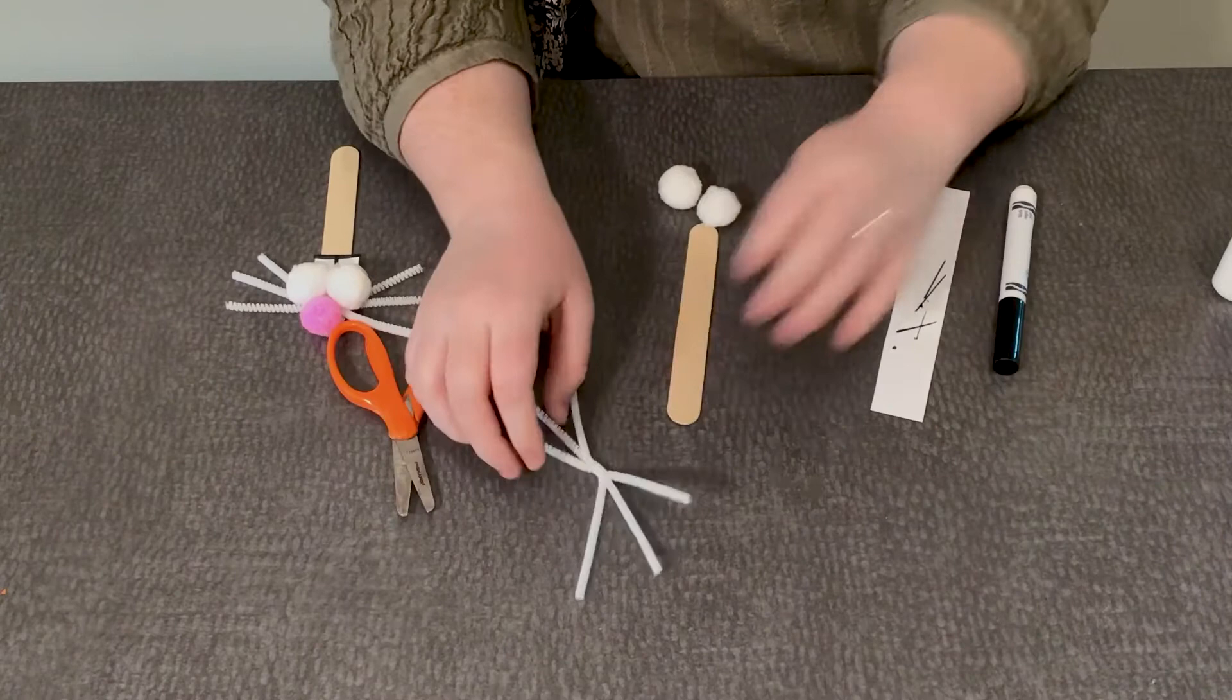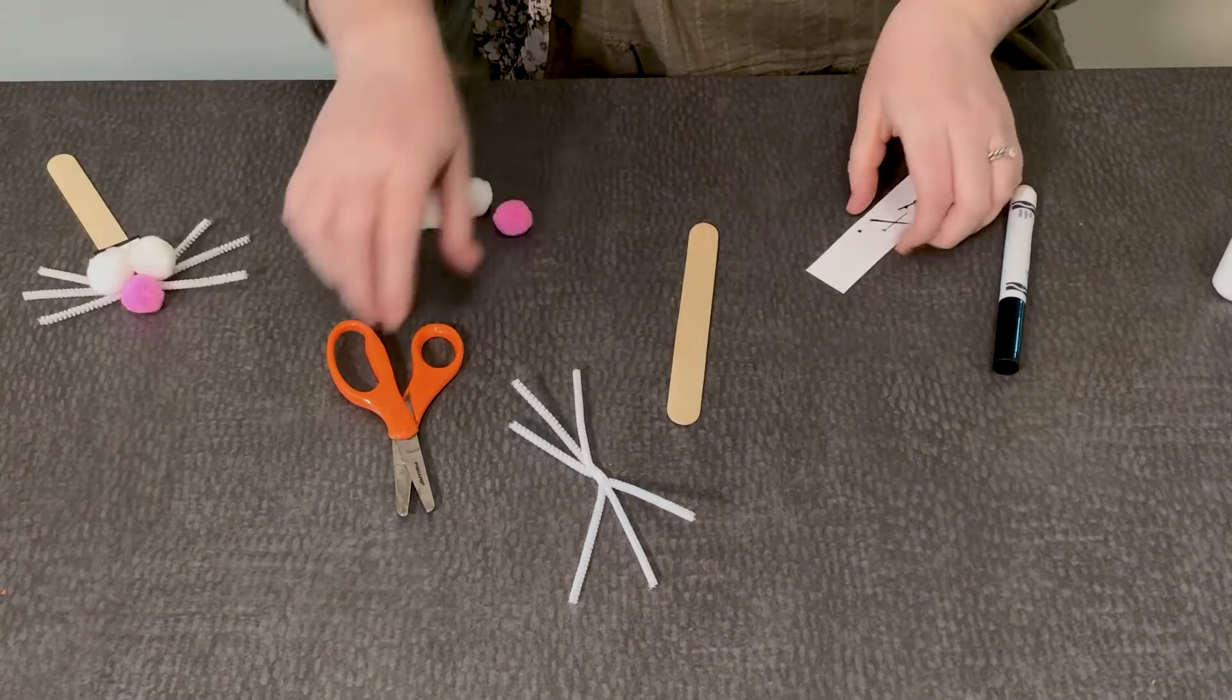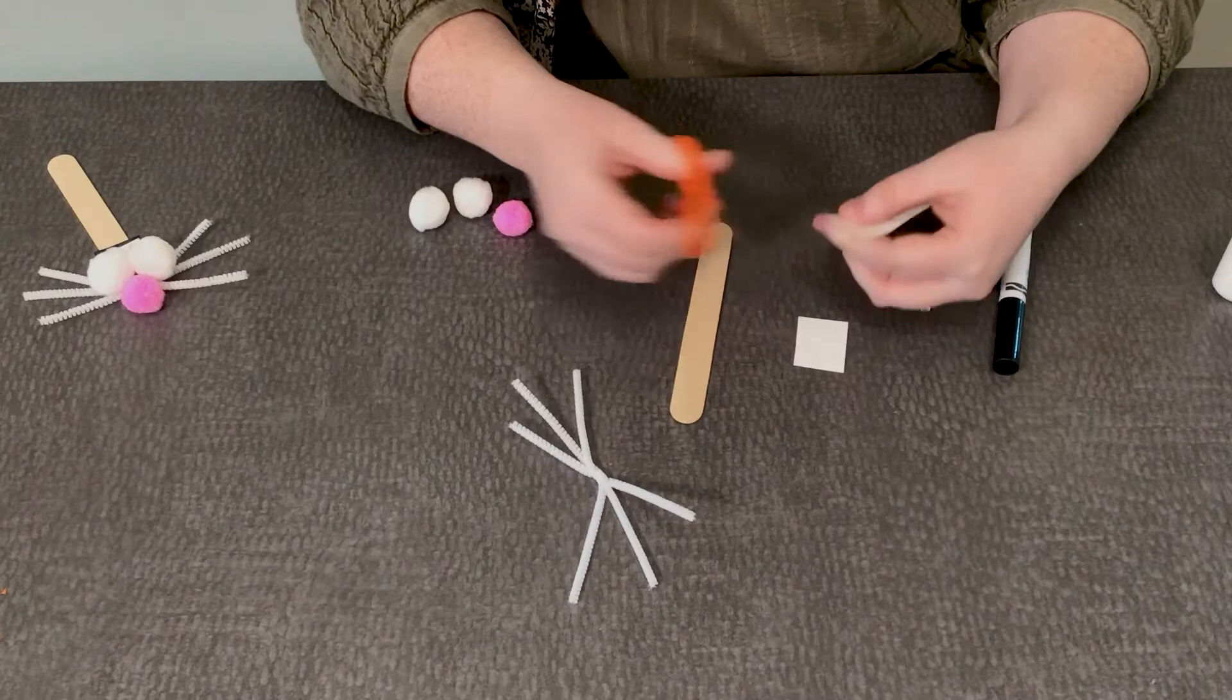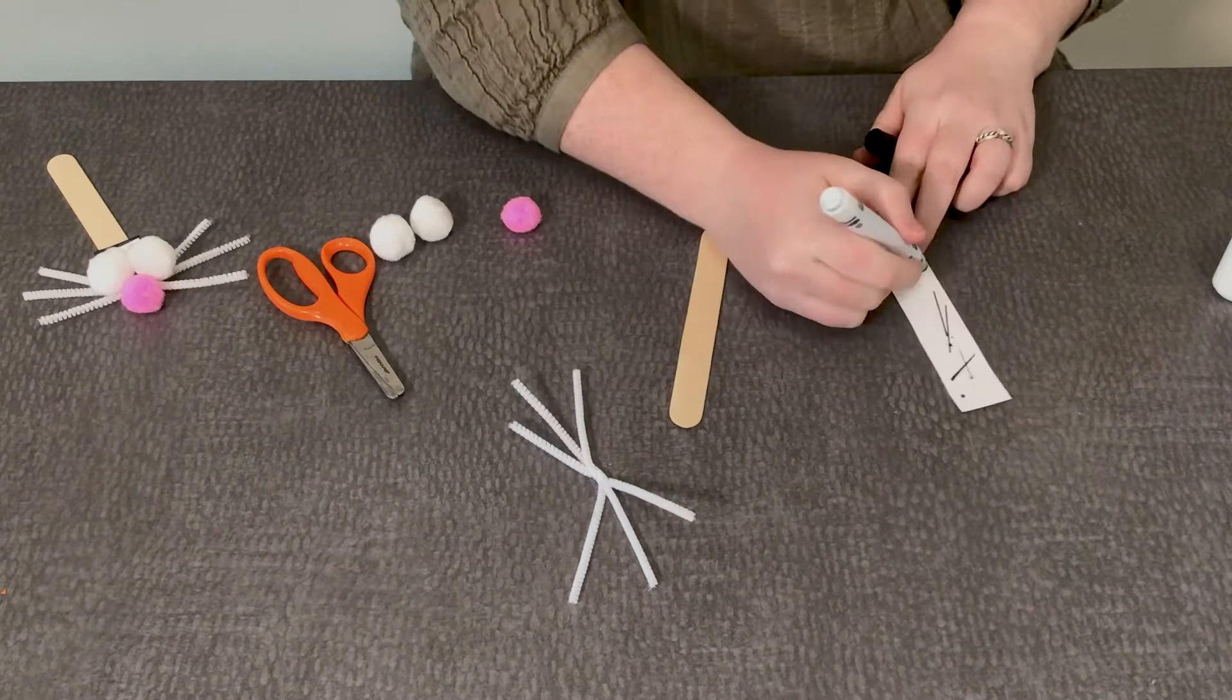First we're going to need to make some bunny teeth, so we're going to cut this little piece of scrap paper down to make our two bunny teeth. And I'm just going to outline this in order for us to see our teeth.